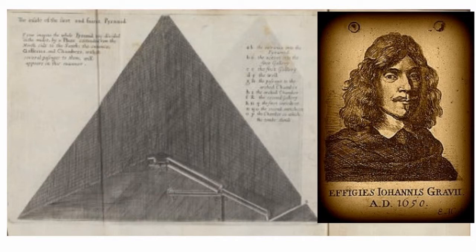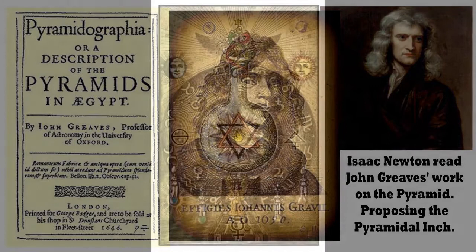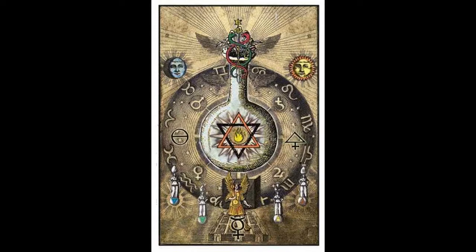John Greaves did one of the earliest surveys of the Great Pyramid, and Isaac Newton was very interested in this. From his study of it, Newton proposed something called the pyramidal inch. I'm not a proponent of the pyramidal inch — I think it was not well supported, as later works have also shown — but it's still worth mentioning, especially in regard to his study of older temples and how his knowledge emerged.